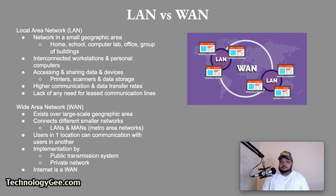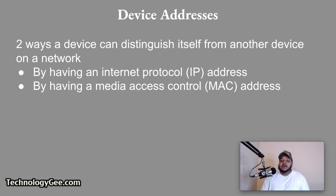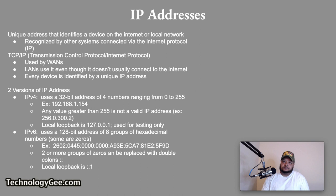Let's talk about device addresses. There are two ways a network device can distinguish itself from another device on a network. The first way is by having an IP address, and the second way is by having a media access control address, also known as a MAC address.